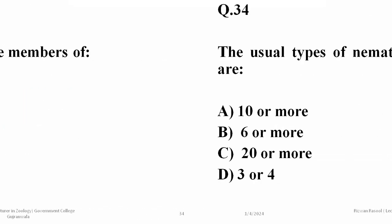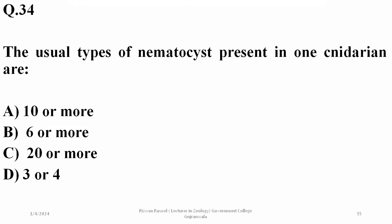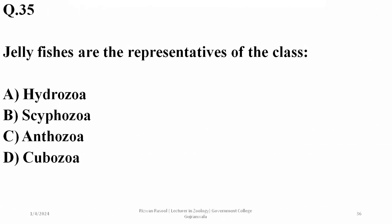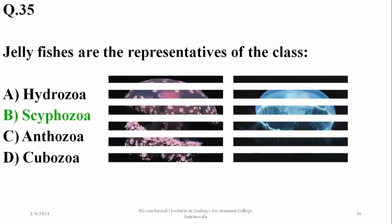The usual number of nematocyst types present in one cnidarian is usually six or more, so B is the right option. Jellyfishes are the representatives of class Scyphozoa.